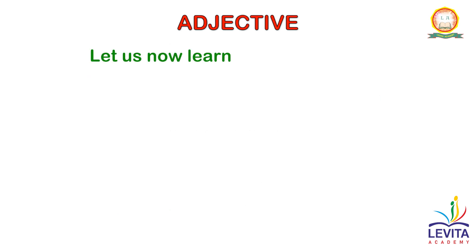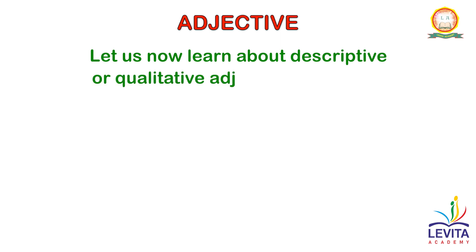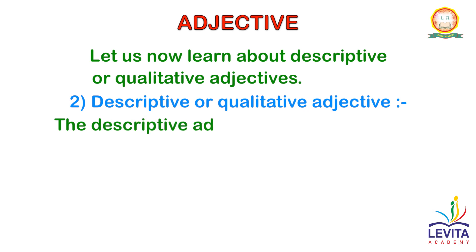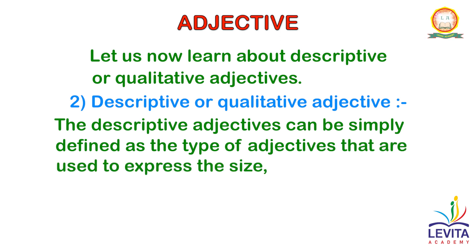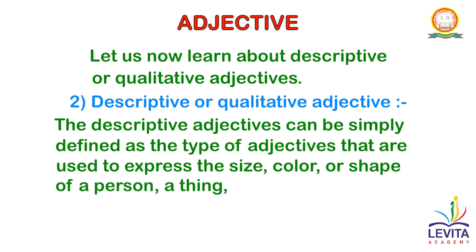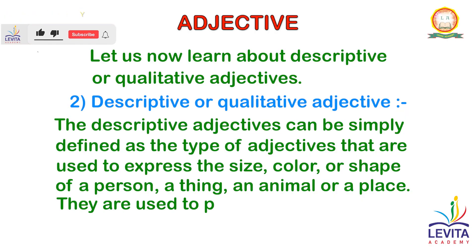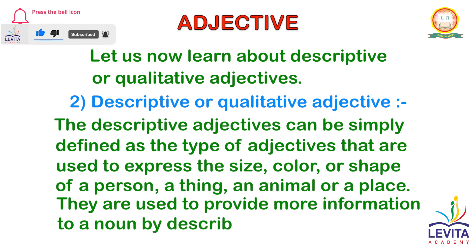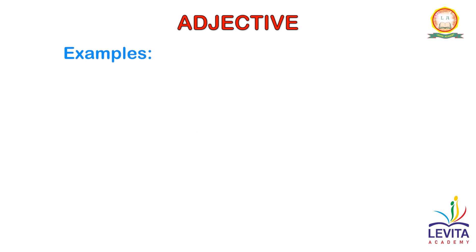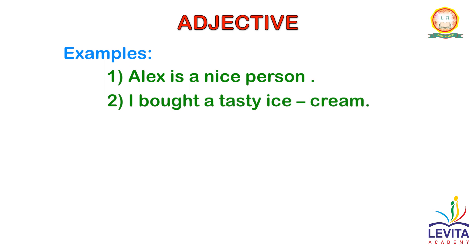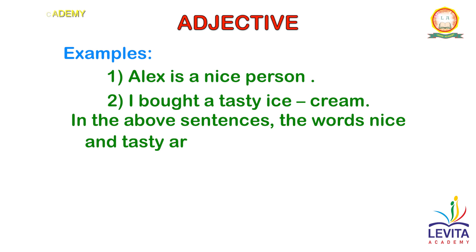Let us now learn about descriptive or qualitative adjectives. Descriptive adjectives can be simply defined as the type of adjectives that are used to express the size, color, or shape of a person, a thing, an animal, or a place. They are used to provide more information to a noun by describing or modifying it. In the above sentences, the words nice and tasty are qualitative adjectives.